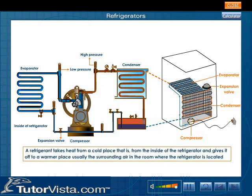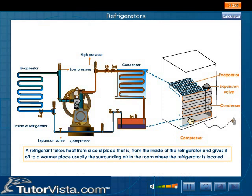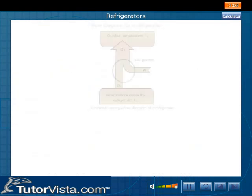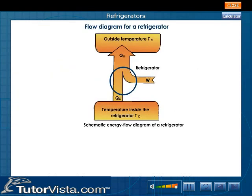Thus, a refrigerant takes heat from a cold place — that is, from the inside of the refrigerator — and gives it off to a warmer place, usually the surrounding air in the room where the refrigerator is located. A flow diagram for a refrigerator is shown here.